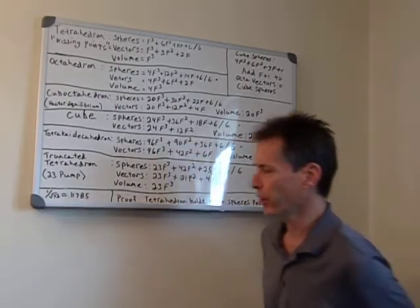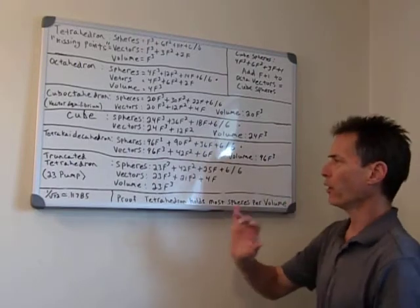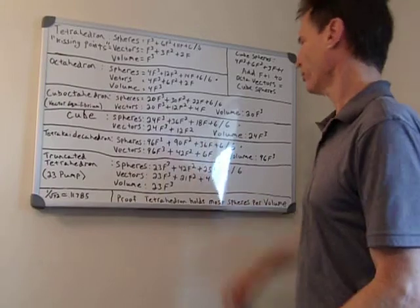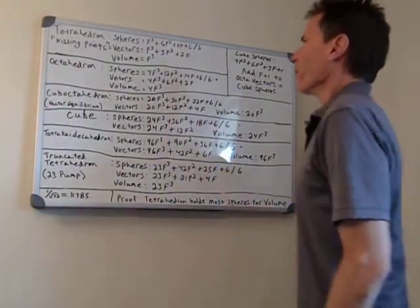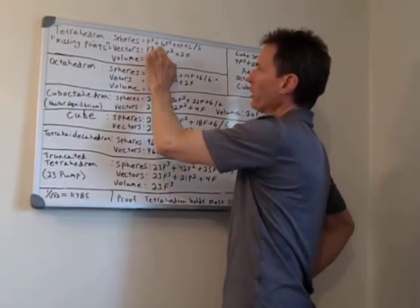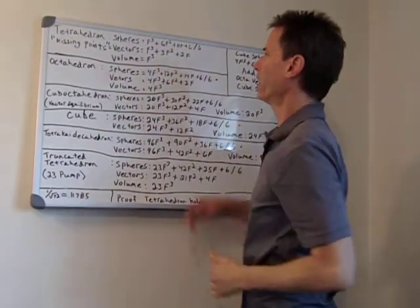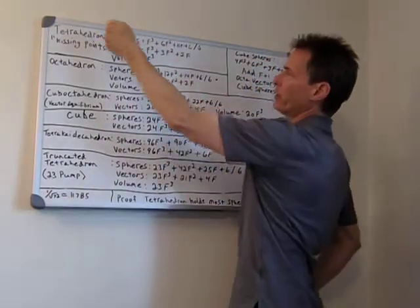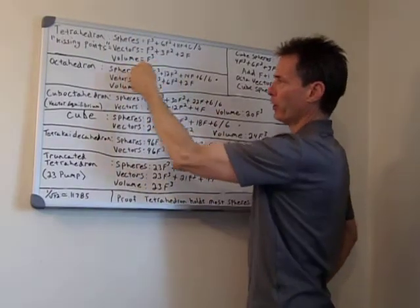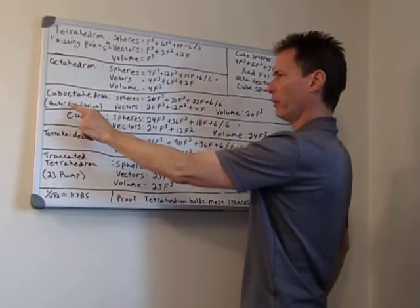I want you to notice the symmetry of the formulas — you probably have never seen these in any geometry classes. Notice the symmetry, and notice that they all begin with a frequency to the third power plus a frequency to the second power plus a frequency, etc. Notice the symmetry where the tetrahedron always has four times frequency to the third power. The octahedron always starts at four times frequency to the third power.